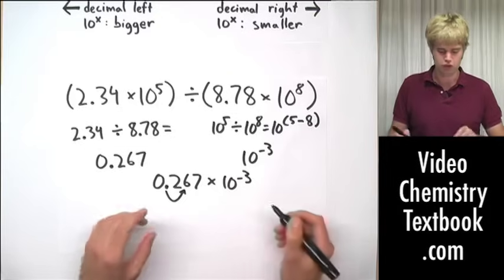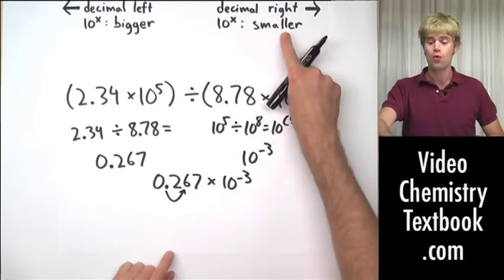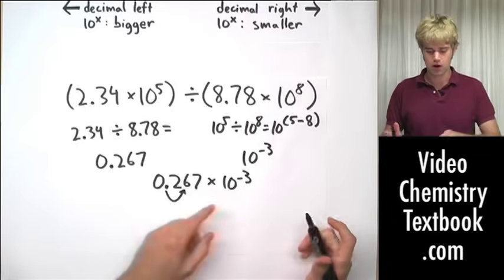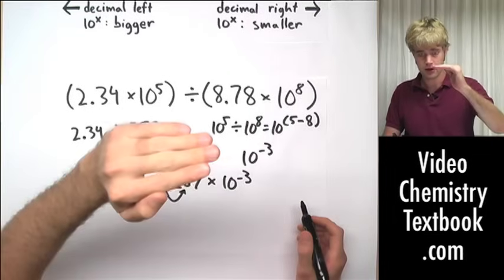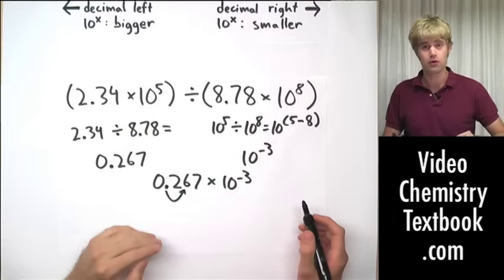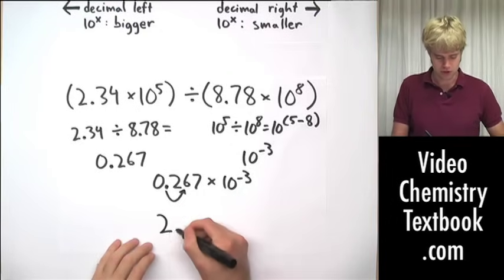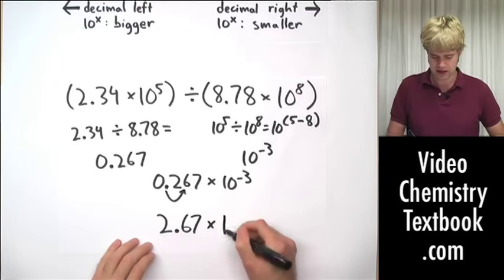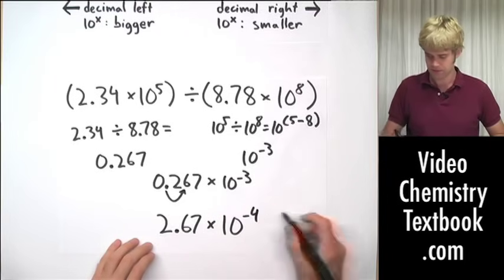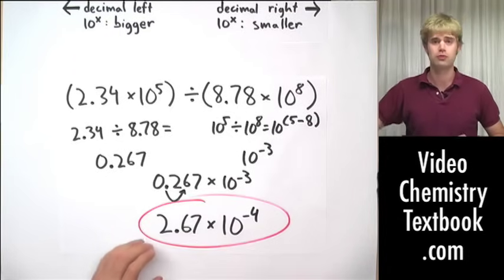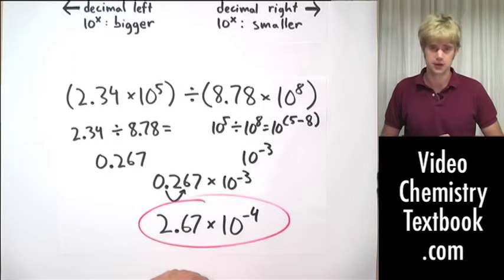So I'm going to move the decimal place to the right one spot. Now here, when we move the decimal to the right, the power of 10 gets smaller. So I'm going to go from 10 to the negative third down lower to 10 to the negative fourth. So expressed in correct scientific notation is going to be 2.67 times 10 to the negative fourth. That's my final answer, and that's how we do multiplication and division with scientific notation.